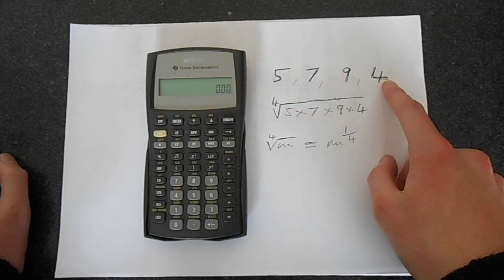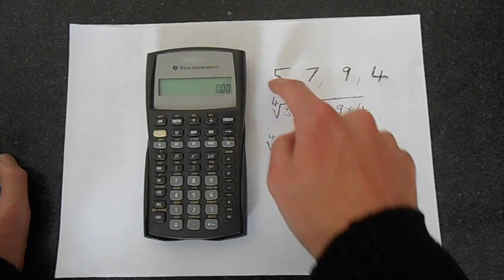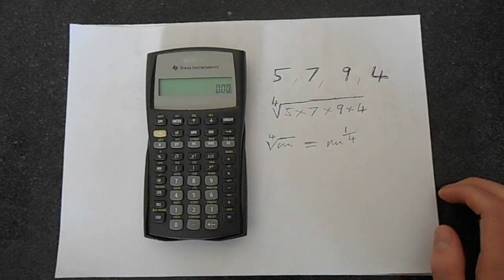So multiply all these numbers together, count them, 1, 2, 3, 4, and take the root corresponding to the number of them. The geometric mean is very simple.